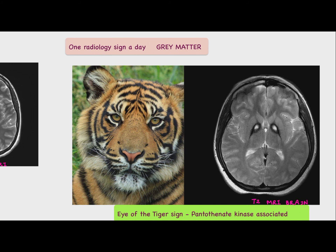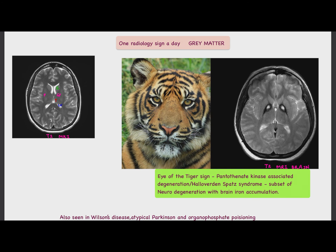The Eye of the Tiger sign refers to symmetrical abnormal low signals on T2-weighted MRI. These low signals are basically due to abnormal iron accumulation. There is also a high signal in the globus pallidus, as seen in the T2-weighted MRI image, and this high signal is due to gliosis and spongiosis.